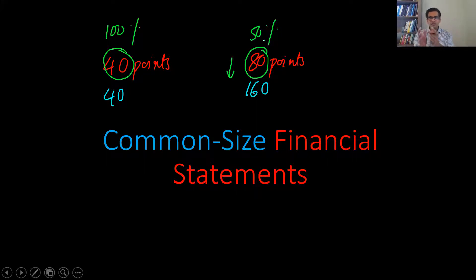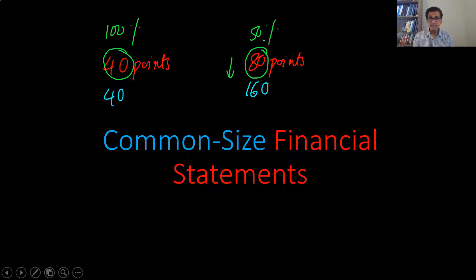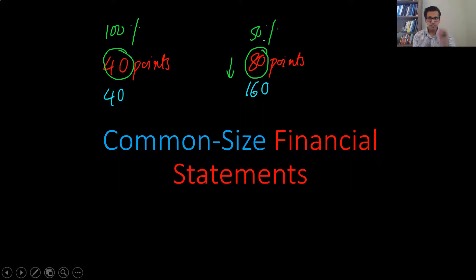Over time, the balance sheet changes. The total number of assets on a balance sheet changes over time, and the income statement changes because the total sales figure changes. So it never makes sense to compare across time, or even with other firms, using dollar figures, because the scales are different. In a common size financial statement, the idea is exactly the same — to take away the effect of scale or size, just like we took away the effect of total points when comparing the tests.